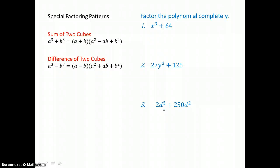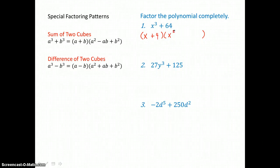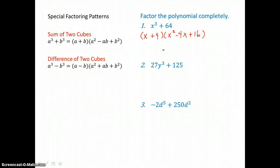Here we're factoring the sum and difference of two cubes. Both factor, but remember only the difference of two squares factors — the sum of two squares is not factorable. For the sum of two perfect cubes in example 1, we factor into a binomial times a trinomial. The cube root of the first term is x, and the cube root of 64 is 4. To get the trinomial, we square x to get x squared, multiply the binomial terms to get 4x and change the sign to negative 4x, then square 4 to get positive 16. This trinomial never factors further, so the sum of two perfect cubes is completely factored.